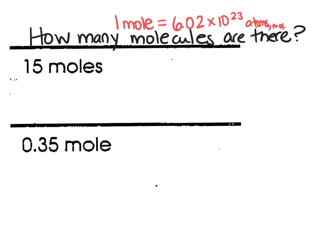So if we start with 15 moles, we're going to create what's called a conversion factor. A conversion factor is a relationship. The relationship we know is that one mole is equal to 6.02 times 10 to the 23rd atoms or molecules.